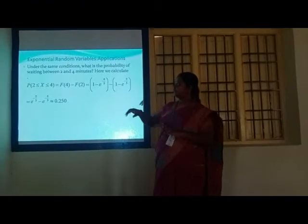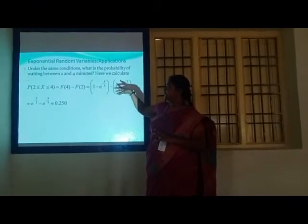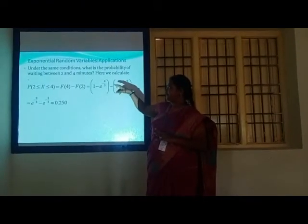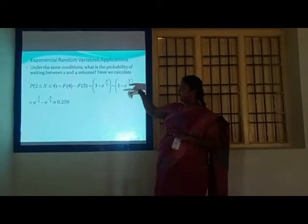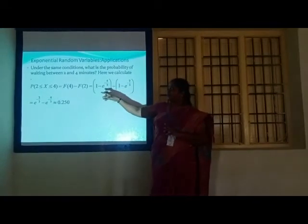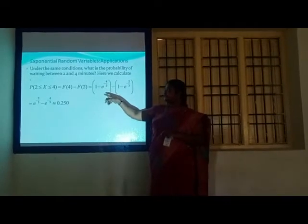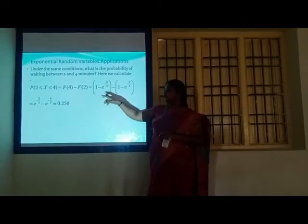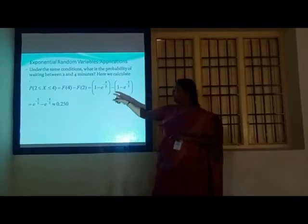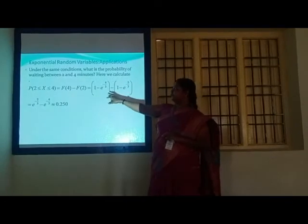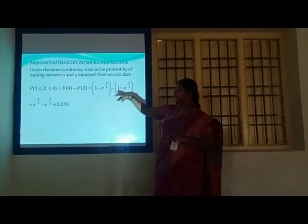This is the problem: under the given conditions, what is the probability of waiting between 2 and 4 minutes? We calculate P(2 ≤ X ≤ 4) = F(4) − F(2) = (1 − e^(−4/3)) − (1 − e^(−2/3)).